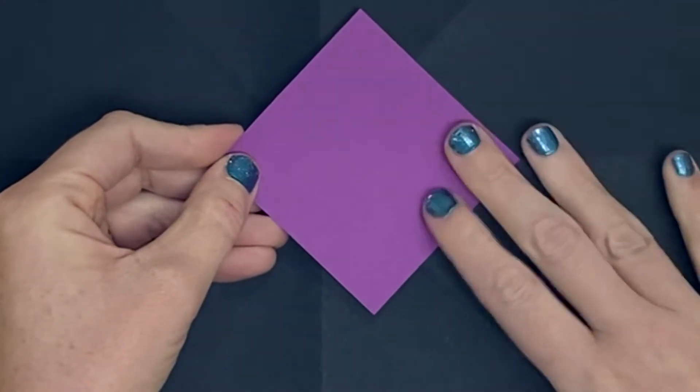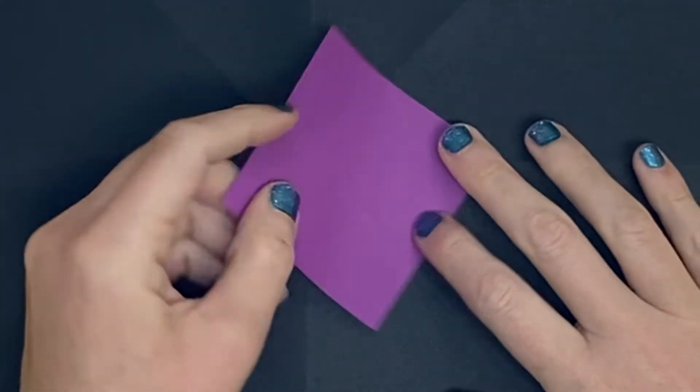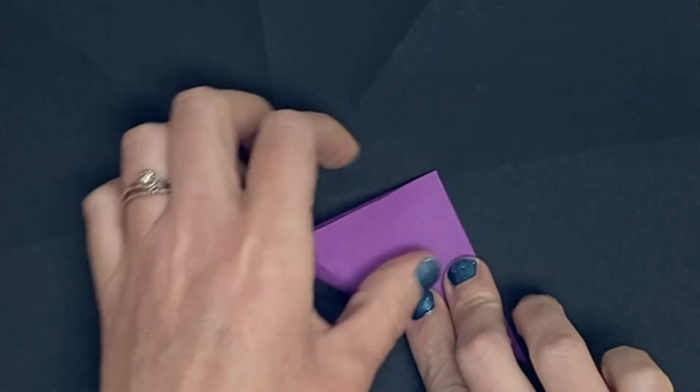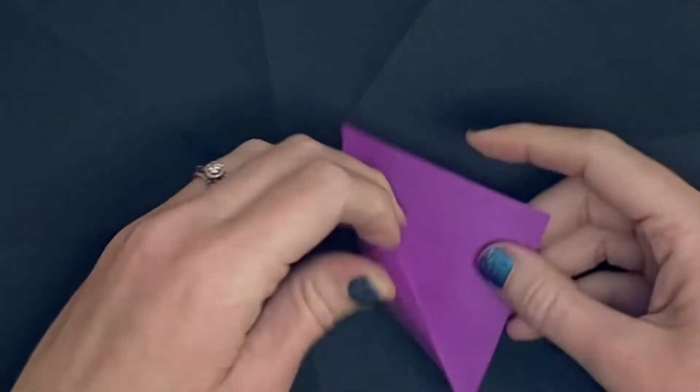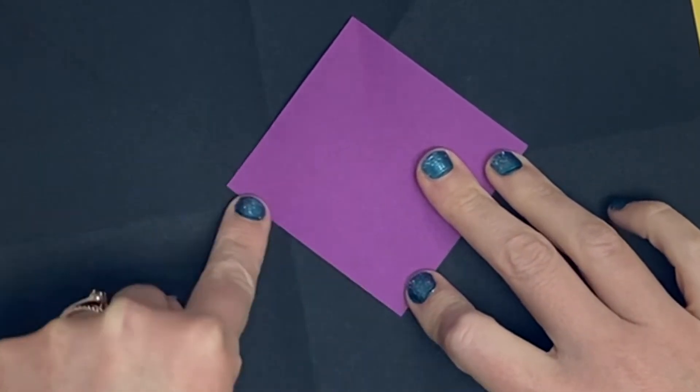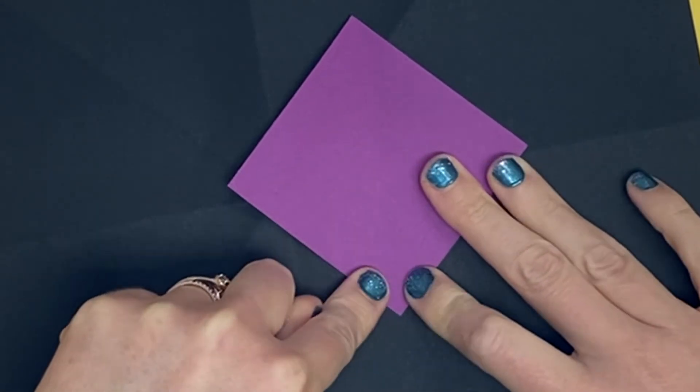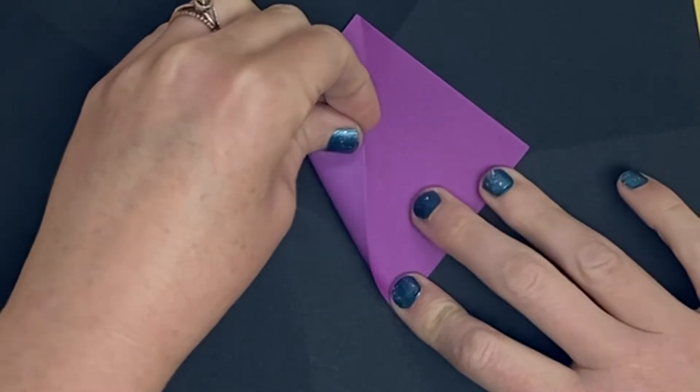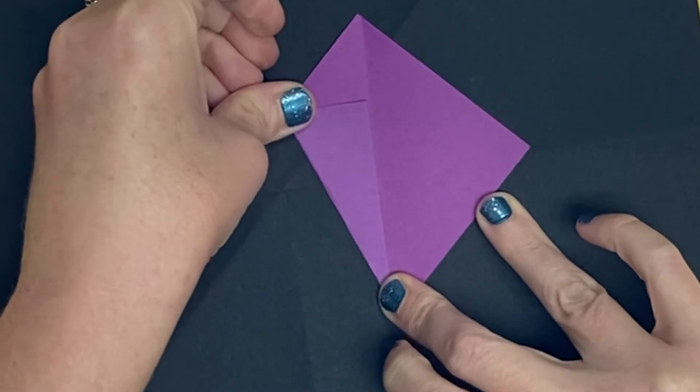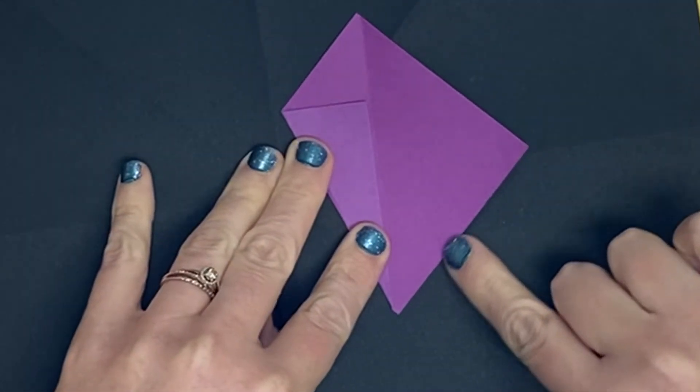Start to make the kite fold by taking the square and going corner to corner to make a triangle. Smooth and crease. That bottom edge is going to line up with the center fold. Move it over carefully with your fingers. Smooth and crease.